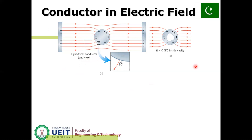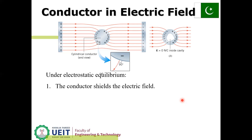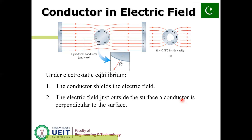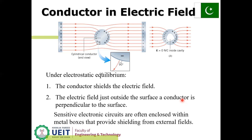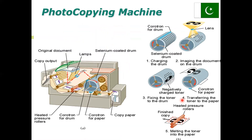Conductor in electric field: here are two figures showing a cylindrical conductor. E equals zero Newton per Coulomb inside the cavity. Positive and negative charges are shown. Under electrostatic equilibrium, the conductor shields the electric field. The electric field just outside the surface of the conductor is perpendicular to the surface. Sensitive electronic circuits are often enclosed within a box that provides shielding from external fields.